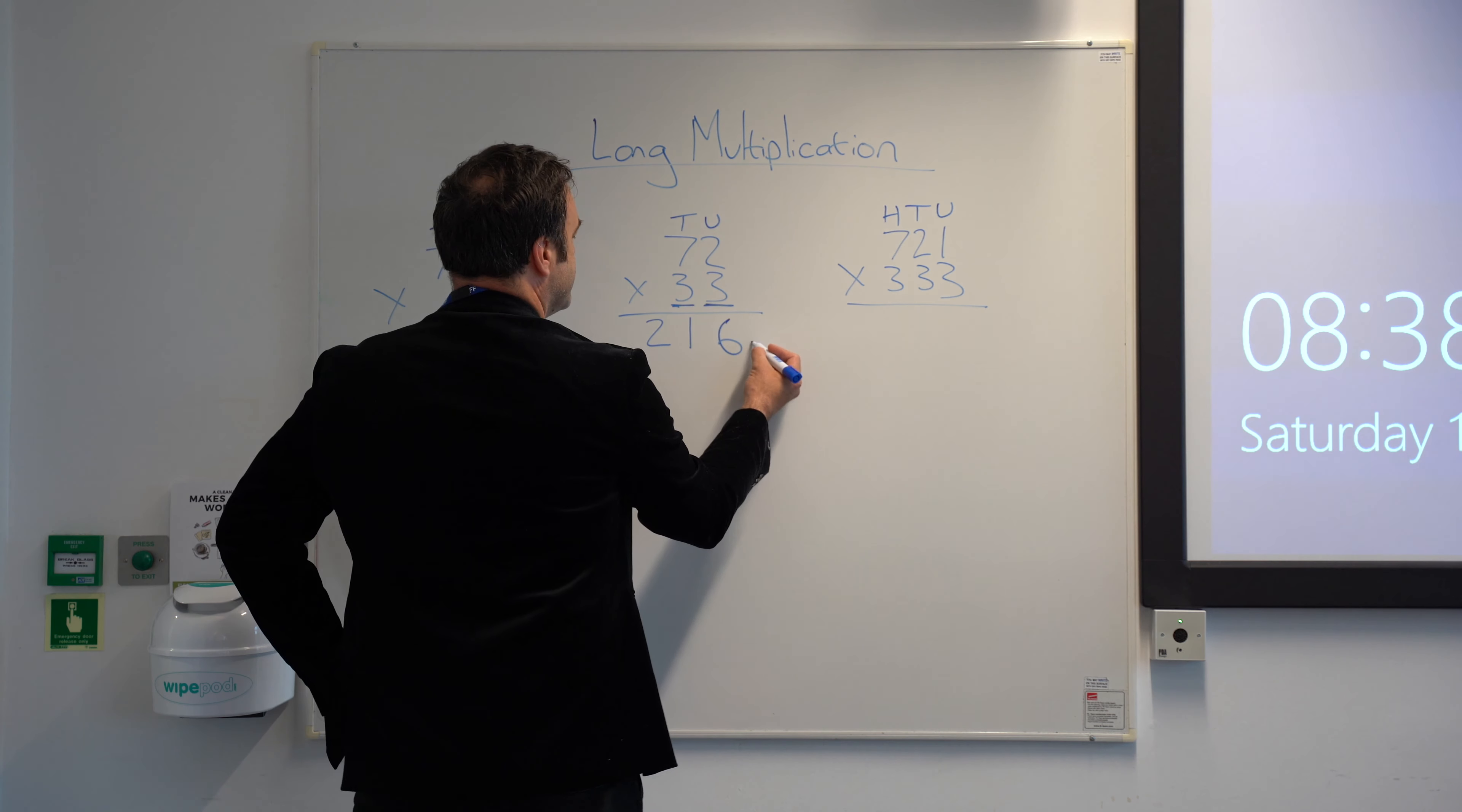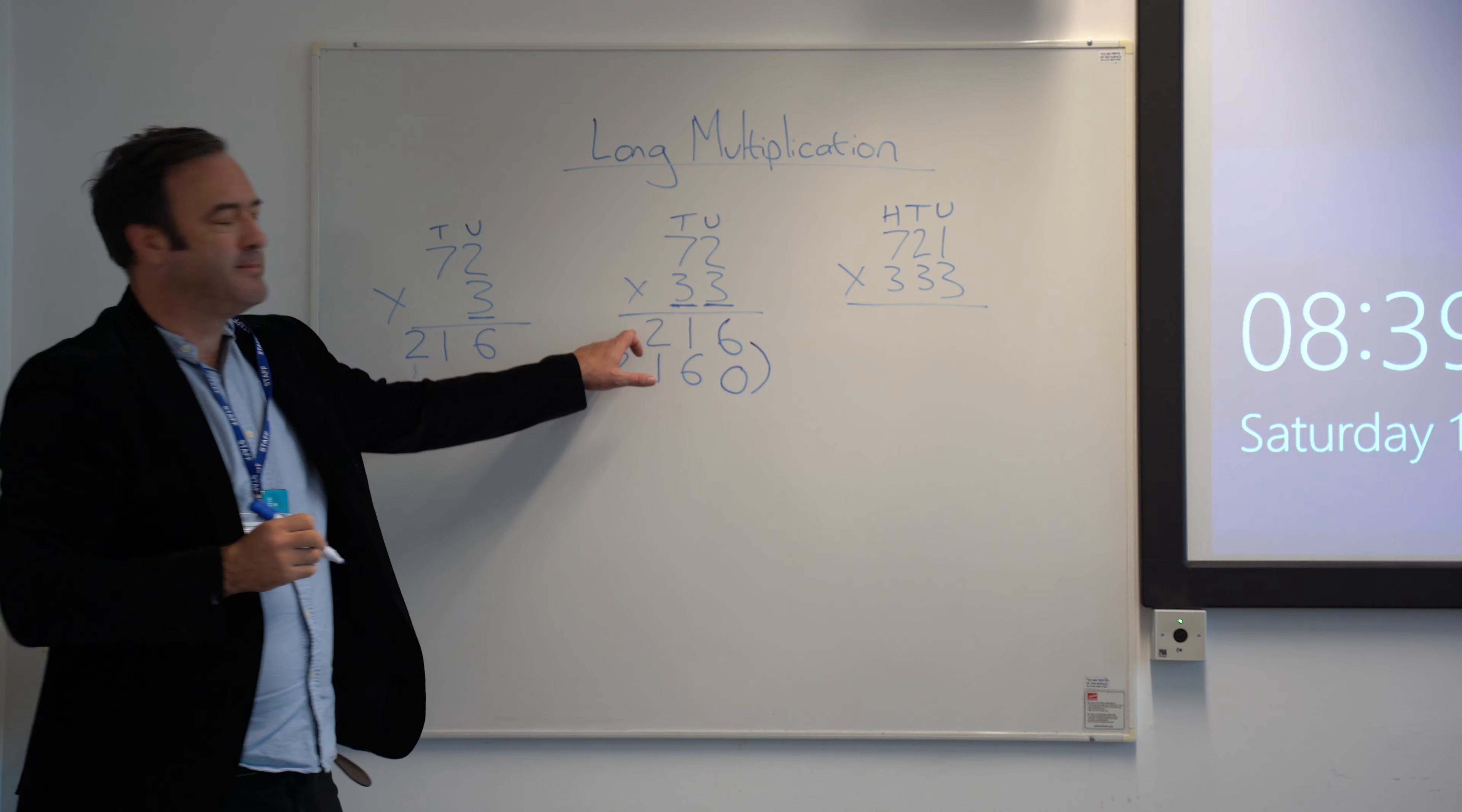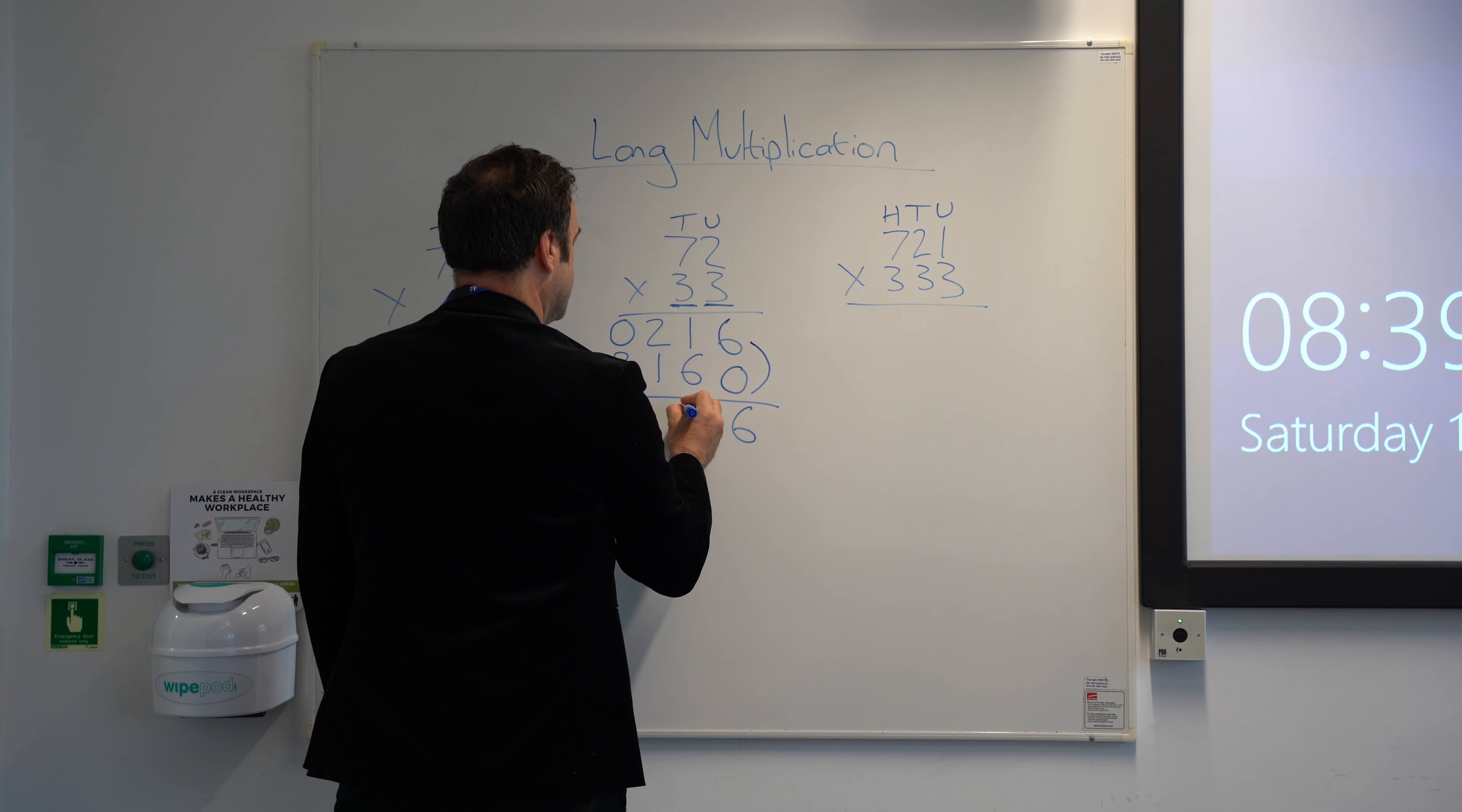So what we need to do is drop down a row. Because we're now dealing with the tens here, we're going to step out using the zero as a placeholder. 3 times 2 is 6, 3 times 7 is 21. Now, I always say to kids, don't be afraid of a gap. Gaps are fine. I always teach kids to put zero as a placeholder, easier on the eyes. Then what we do is add these together. So we're actually adding the multiple of the units, the multiple of the tens, 6, 7, 3, 2.